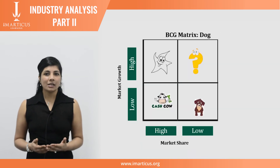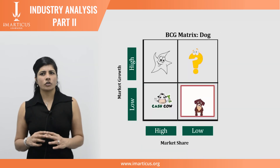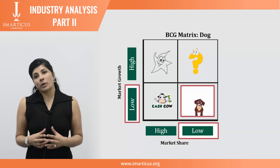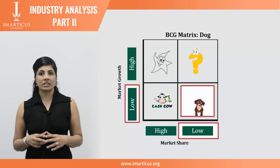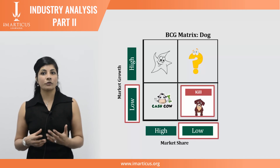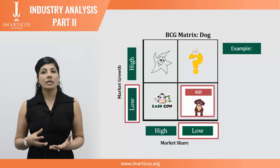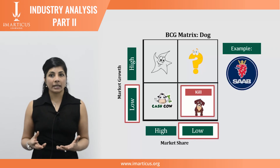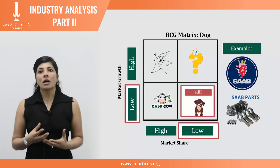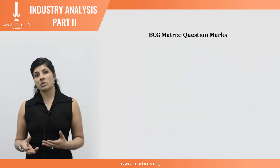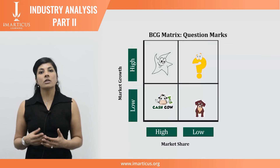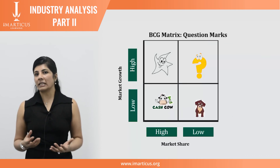Let's begin with the dog — products with low market share and a low growth rate. You either kill them or phase them out. For example, in the automotive sector, when the Saab car line ended, a whole business emerged from providing Saab spare parts. Another example of a dog was the Samsung Watch — a low market share product in a low growth rate market that no one needed at that point.